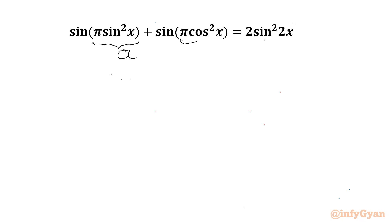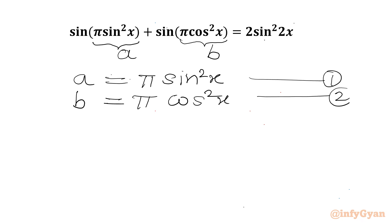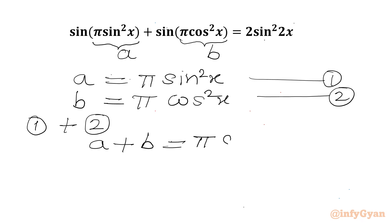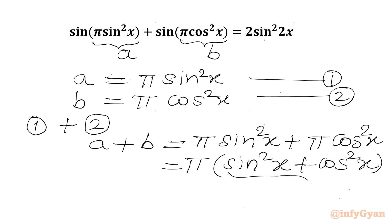Let's say the first bracket is a and the second bracket we will call b. So a = π times sin²x and b = π times cos²x. Now let's add both equations. In the LHS I will get a plus b, and in the RHS I can write π times sin²x plus π times cos²x. Pi is common, so we get sin²x plus cos²x in the bracket, which equals 1 by the trig identity. So RHS will be π, meaning a plus b = π.